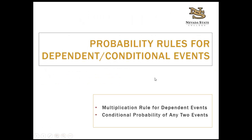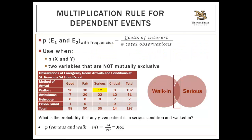Now let's look at probability rules for dependent or conditional events. If you have two variables occurring simultaneously and see the word 'and' — meaning both conditions must be met — you're dealing with the multiplication rule for dependent events. You'll notice this formula is the same as the addition rule for non-exclusive events, but there will only be one cell of interest in the table — we're really just looking at the intersection, the middle of the Venn diagram.